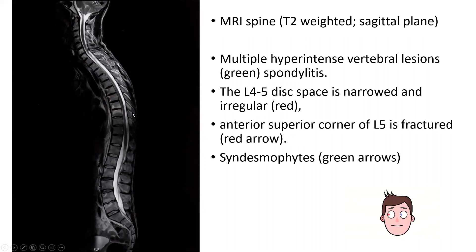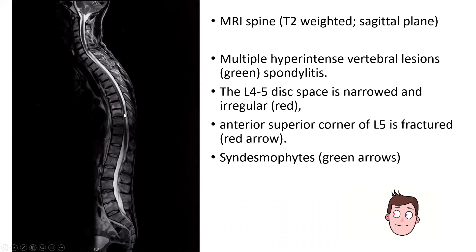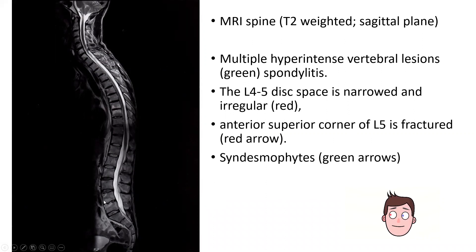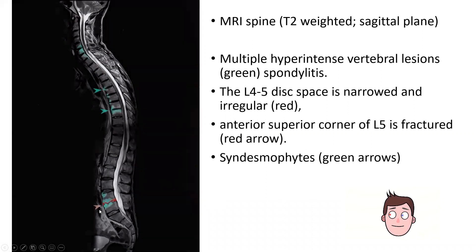The MRI is also very indicative because it shows soft tissue inflammation. You'll see multiple hyperintense lesions classic for spondylitis — appearing white on a T2-weighted MRI, which shows liquid and soft tissues as brighter. L5 also shows some compression fracture, outlined in red, with inflammation and syndesmophytes indicated by green arrows.